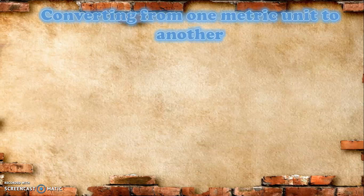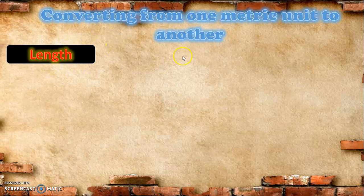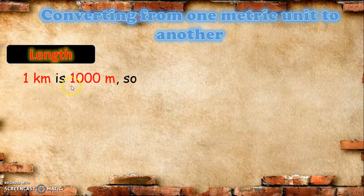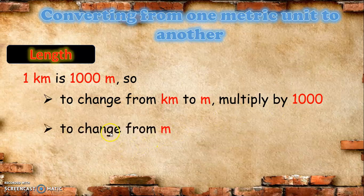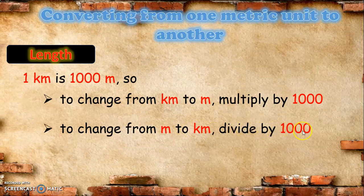First, let us discuss how to convert one metric unit to another. In the previous lesson, we discussed how to convert length, mass, and capacity. We will go back to the units in length. We all know that 1 kilometer is equal to 1,000 meters. To change from kilometer to meter, we need to multiply by 1,000. And if we want to change from meter to kilometer, we need to divide by 1,000.